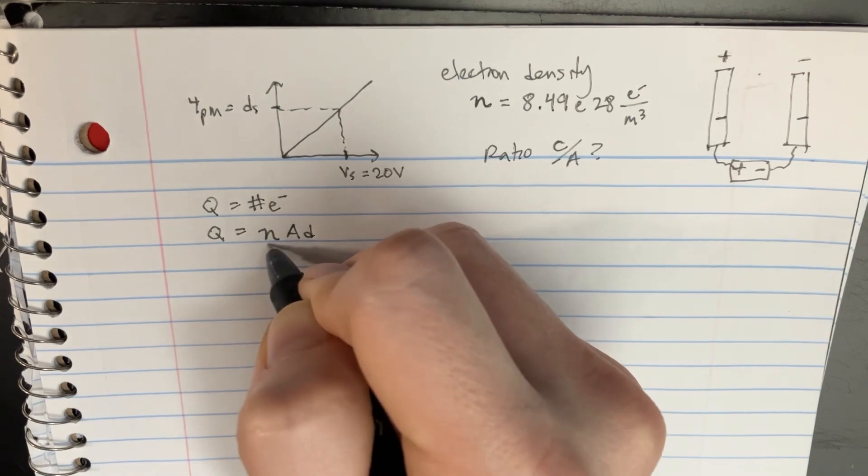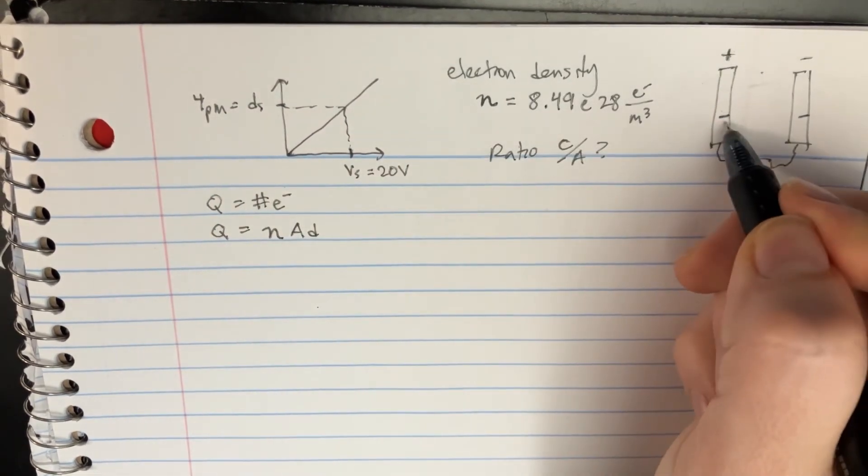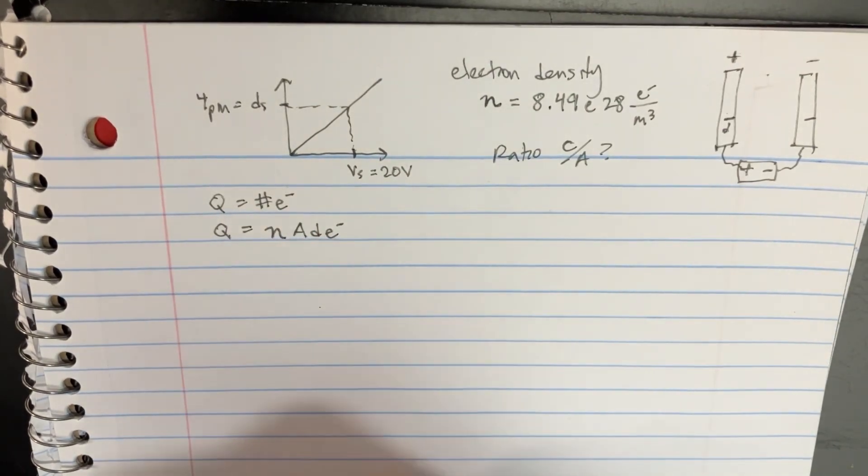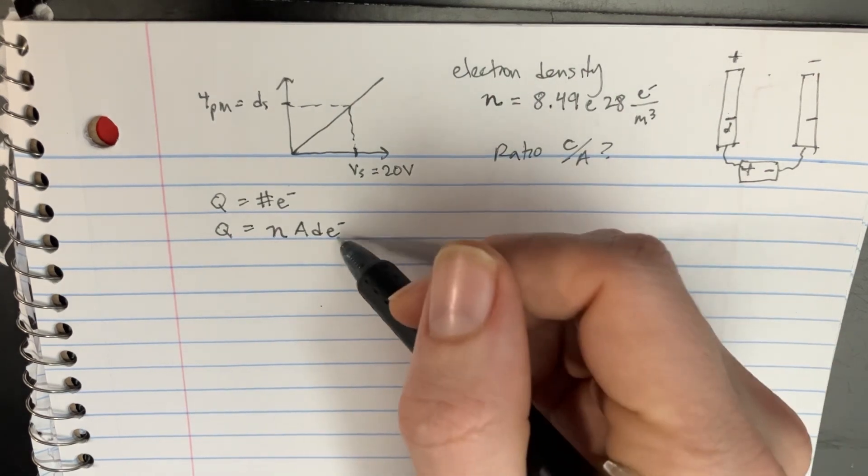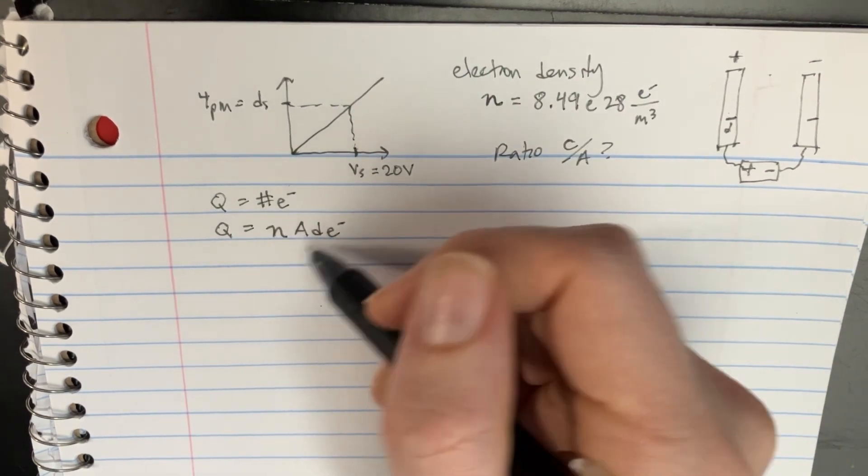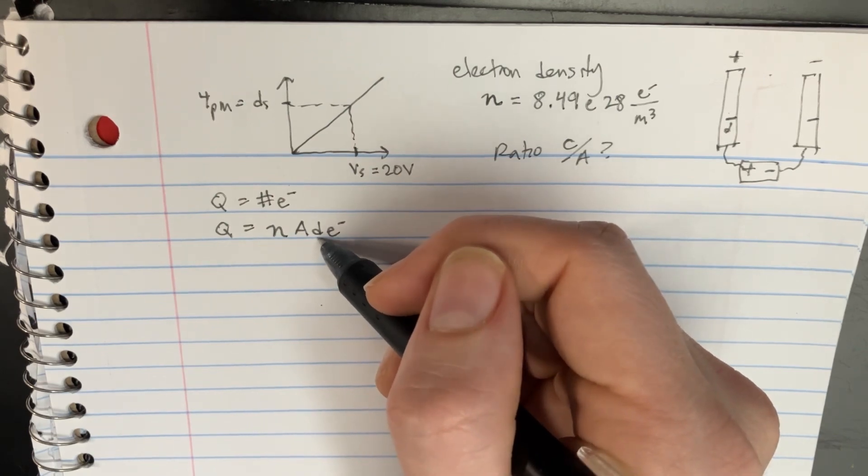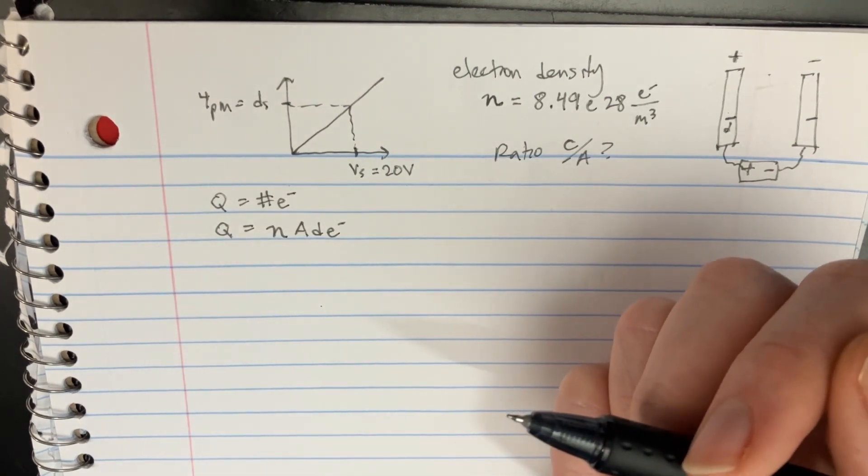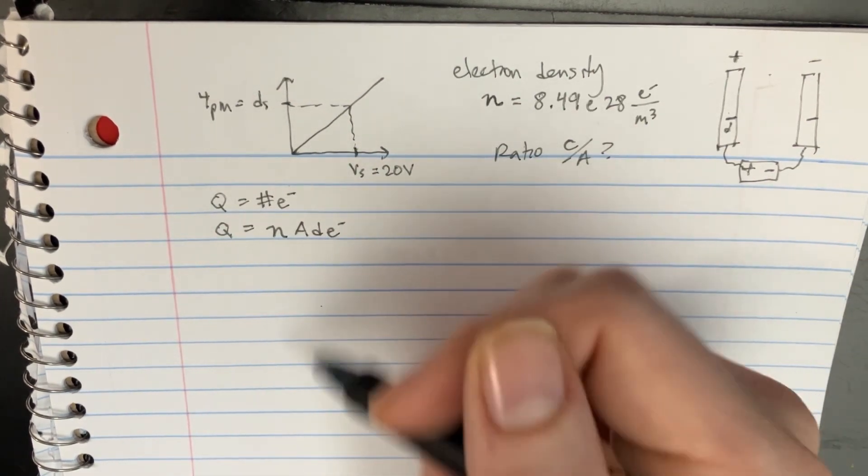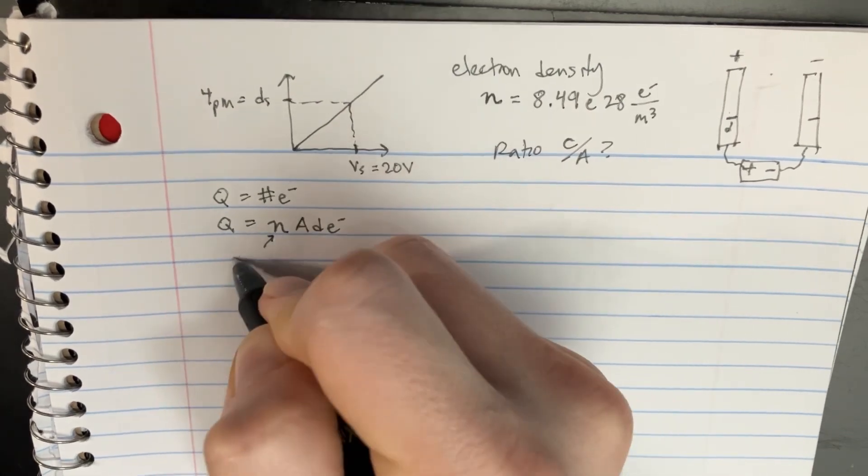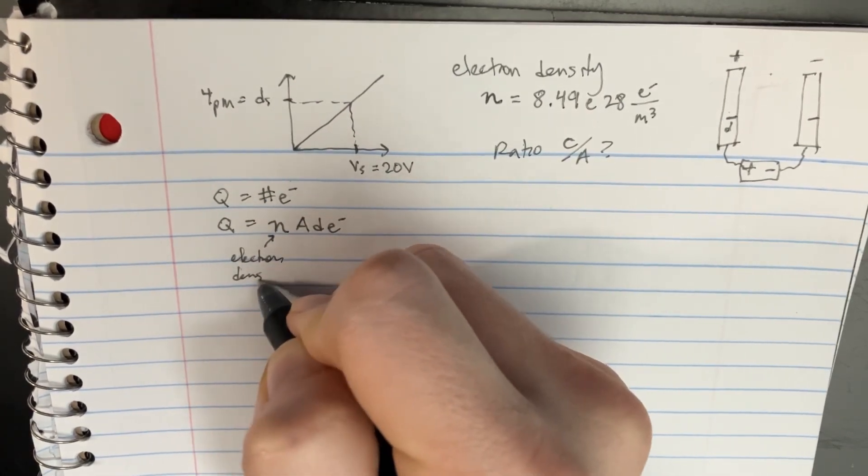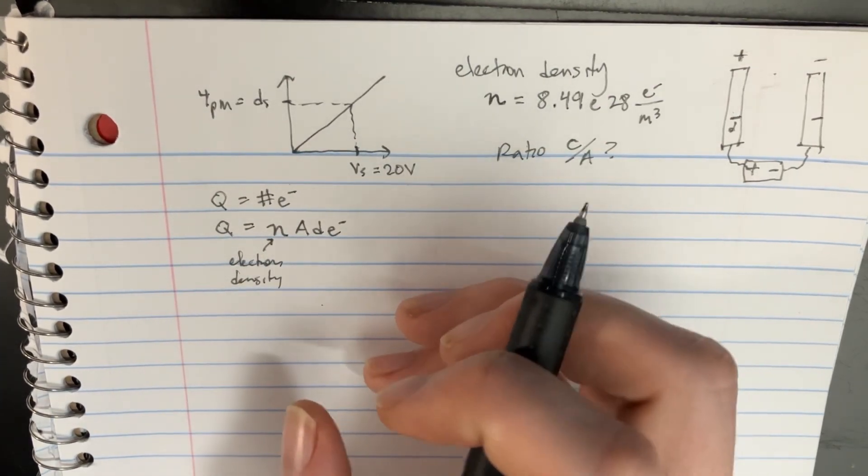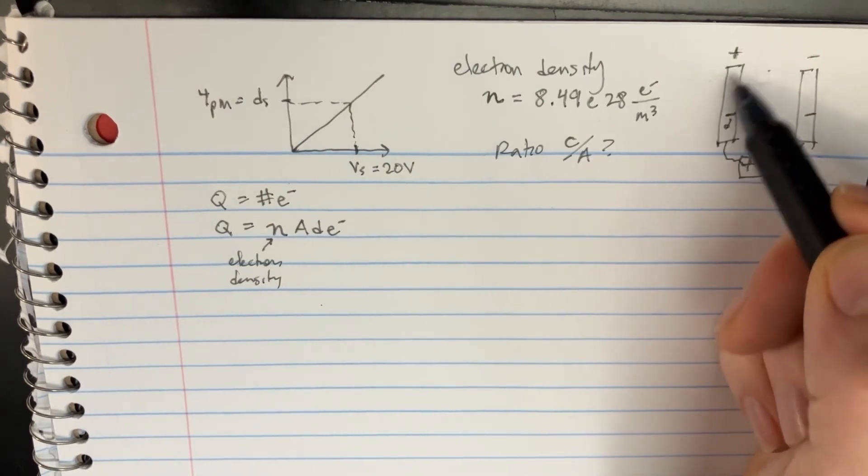We'll put d here and then the electron charge. The number times the electron charge. This over here is going to be the density times the area times the depth that it's coming from times the electron charge. That's what electron density is here, this n electron density. You can kind of imagine how many electrons are there and how far are they in and what's the area here, and that's going to be the charge.